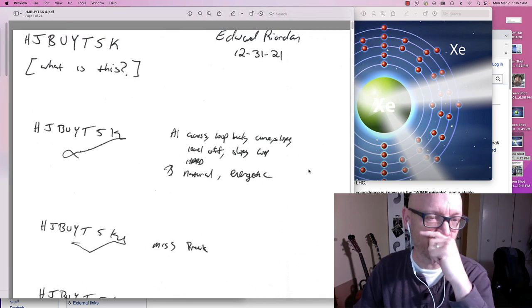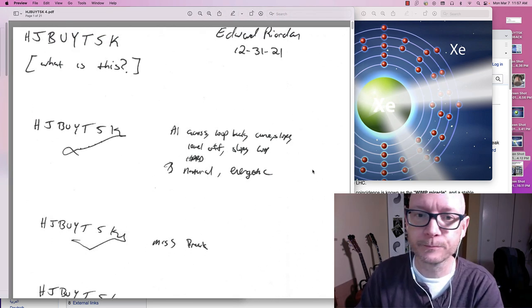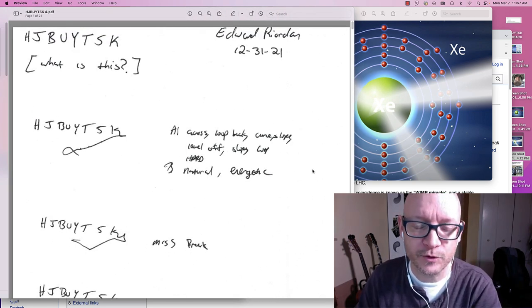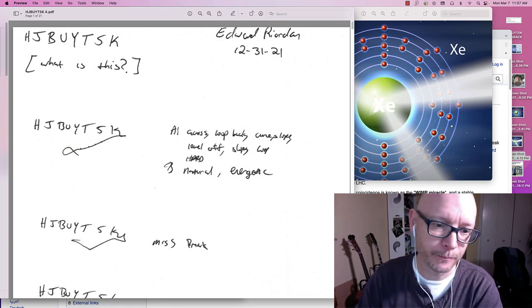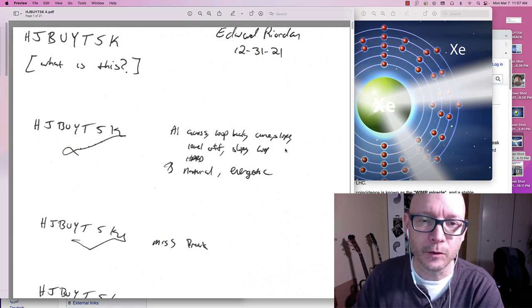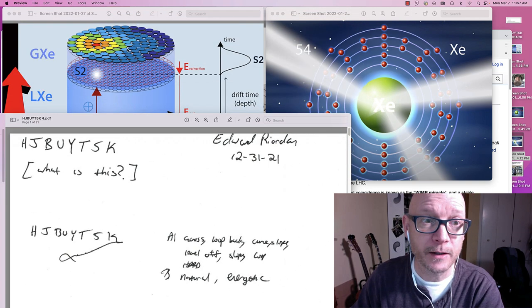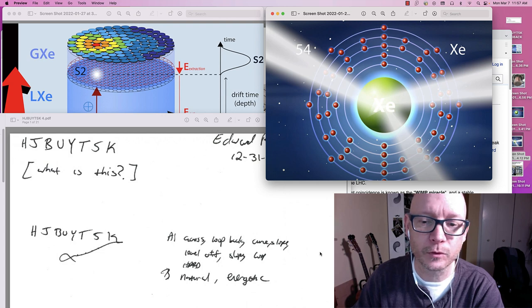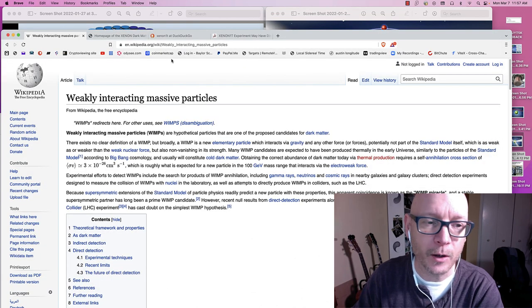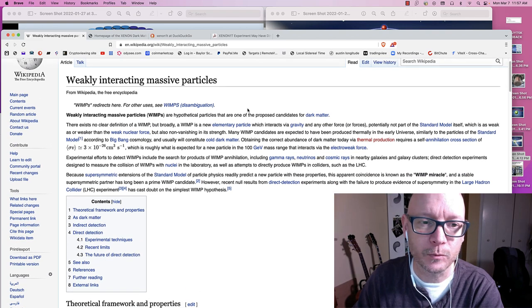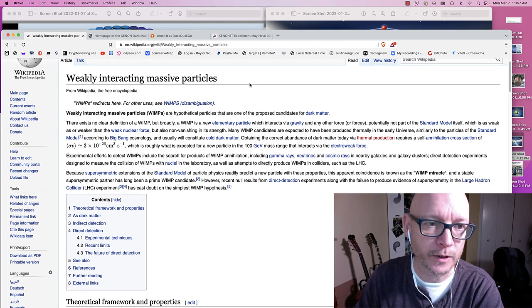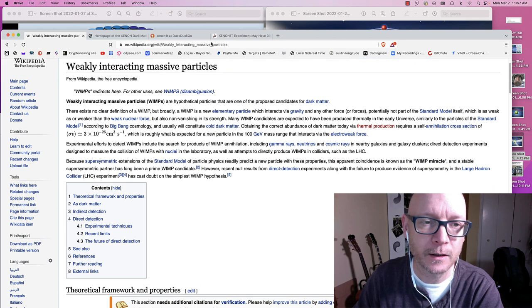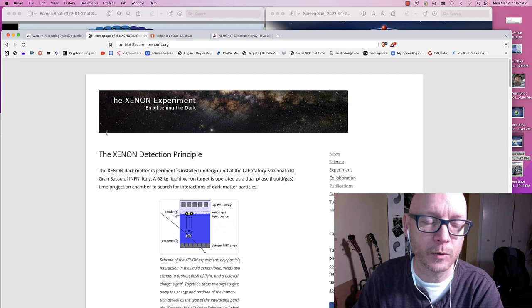They light up when they get hit with one of these weakly interacting massive particles. Once it does that, the excited electrons float up into the gas range of the detector, where they have it set up where it can basically create a 3D model of where and when that weakly interacting particle made contact with one of the Xenon elements, so that they can study it and see what it was. And from what I heard or read, once the study was over, the device had detected more than they had anticipated.